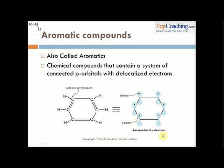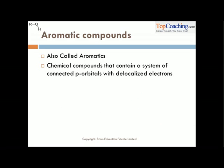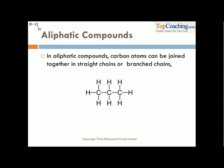Aromatic compounds have a ring-like structure. So, back to alcohols: when a hydrogen atom of aliphatic compounds is replaced by an OH group we get alcohols, and when a hydrogen atom of aromatic compounds is replaced by an OH group we get phenols. Aliphatic is to alcohols; aromatic is to phenols.